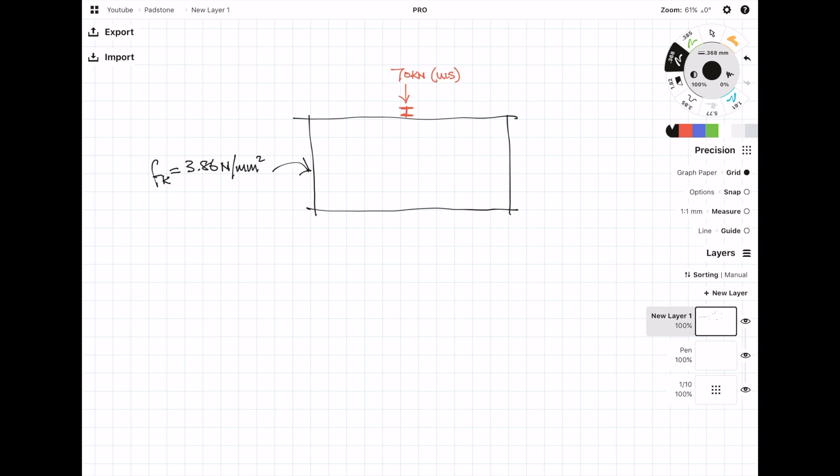The steel beam size is going to be a 254 by 146 by 31 UB. The wall is going to be 100 mil thick. The material safety factor gamma is 3 for masonry and the bearing factor for this configuration beta is going to be 1.25.